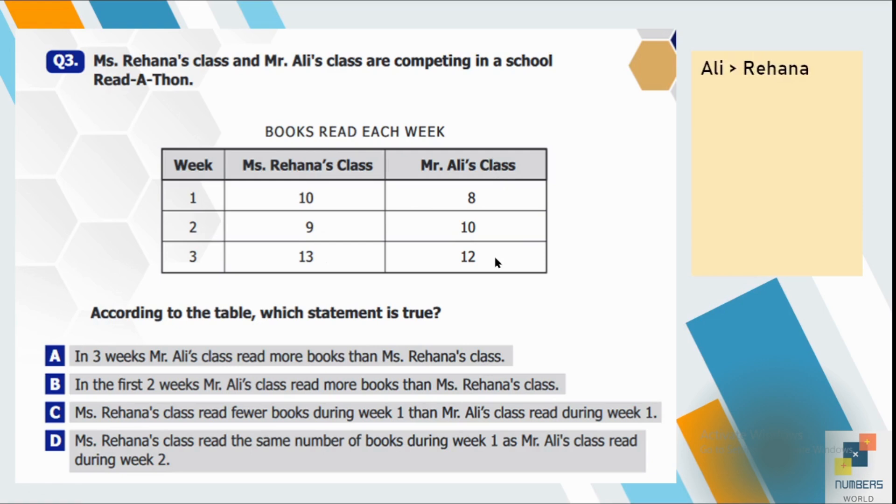So if we see in the three weeks the total of Ali's class is 30 and Rihanna's class is 32. According to the statement Mr. Ali's class have read more books than Rihanna. Which is not true because total of Ali is 30 and Rihanna is 32. This is a wrong statement. So not correct.